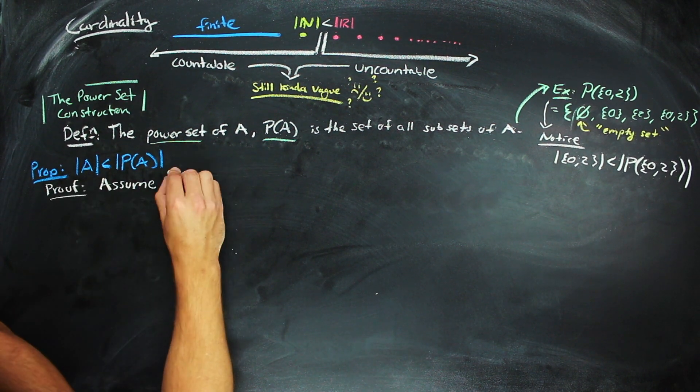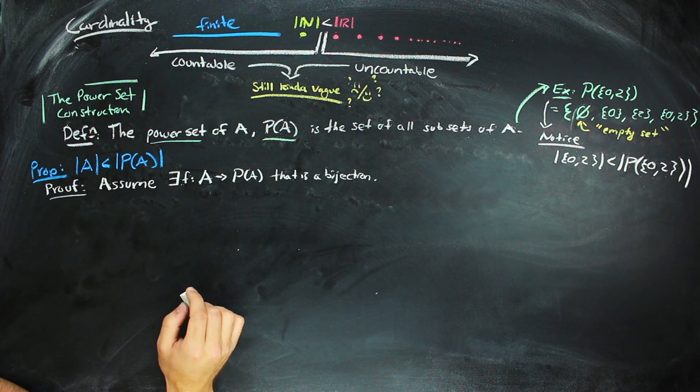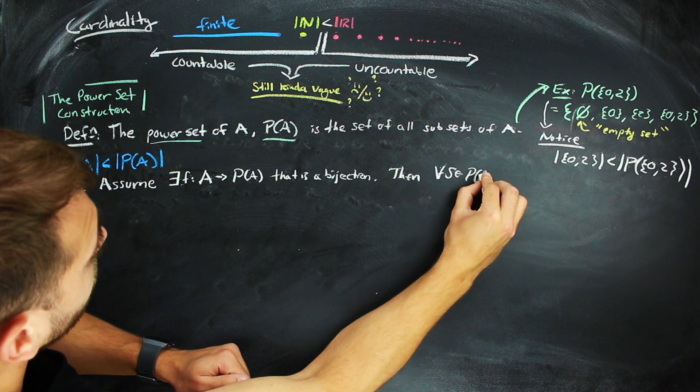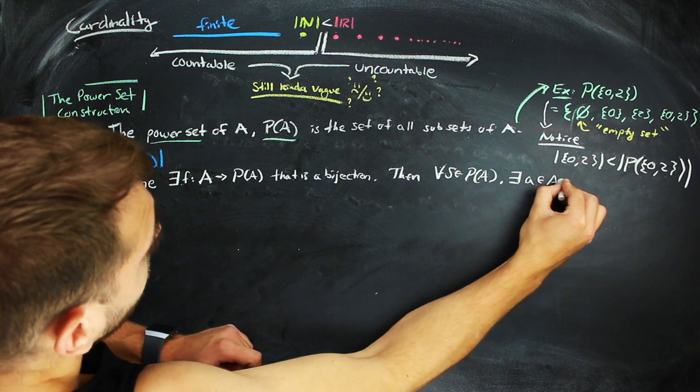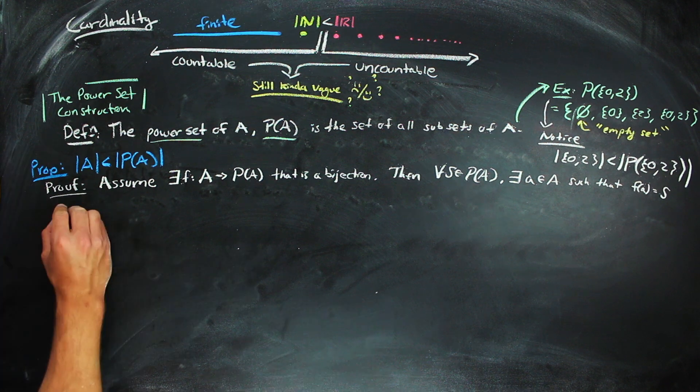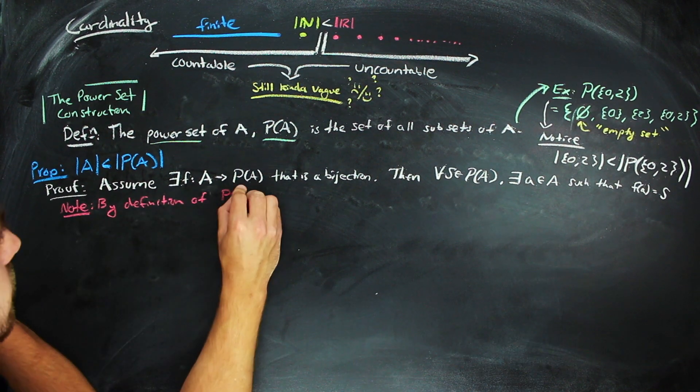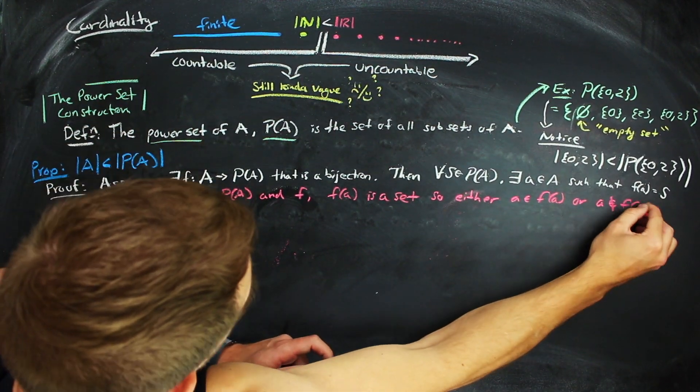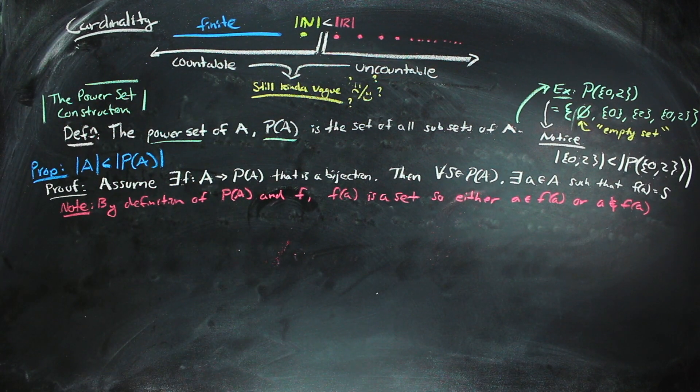Alright, let's assume that there is a bijection from a set to its power set. Then, for each element in the power set of a, there is an element of a that the bijection sends to it. Notice, as well, that the function applied to any element of a is a set. So a is either in f of a, or a is not in f of a.